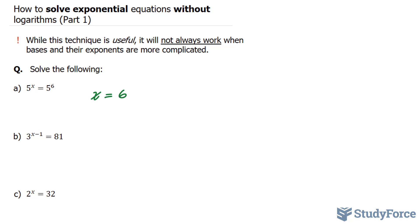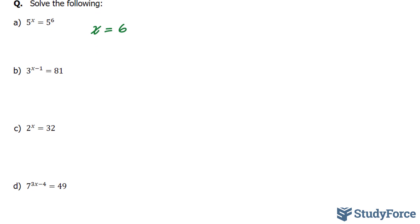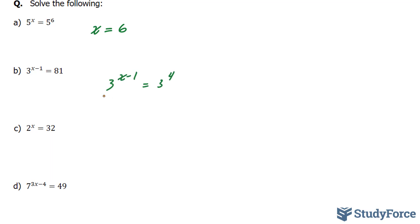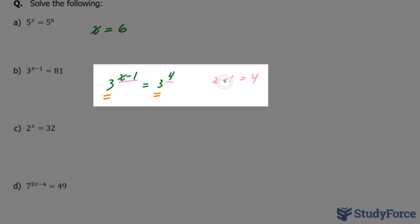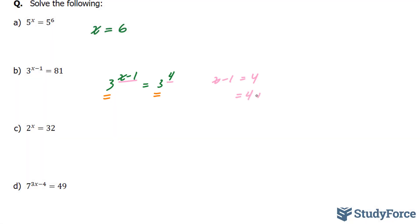Now let's try to solve for x in the next example. Here we have 3 to the power of x minus 1 is equal to 81. Notice that this time the bases are different. So how can we make the number 81 into the base of 3? Keep in mind that 3 to the power of 2 is 9, 3 to the power of 3 is 27, and 3 to the power of 4 is 81. So we can replace this 81 with 3 to the power of 4. Now since the bases are the same, we can set the exponents equal to each other. So we have x minus 1 is equal to 4, and we can solve for x by taking this 1 over: 4 plus 1, therefore x is equal to 5.